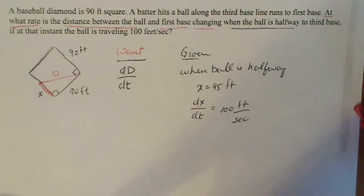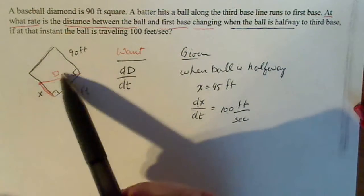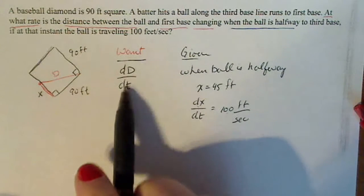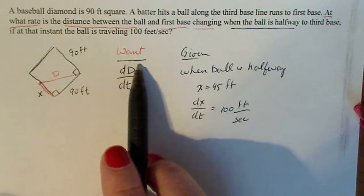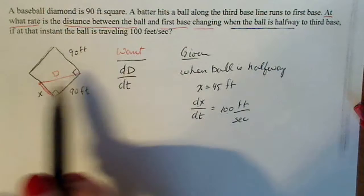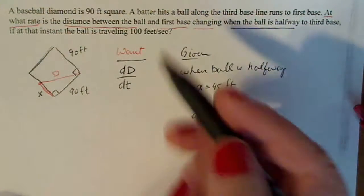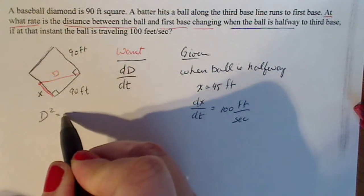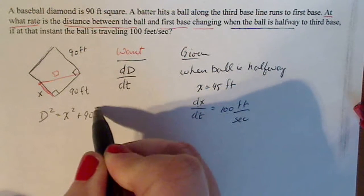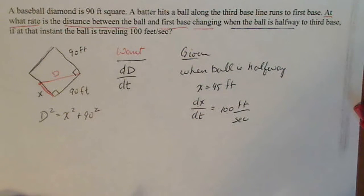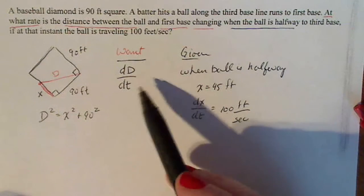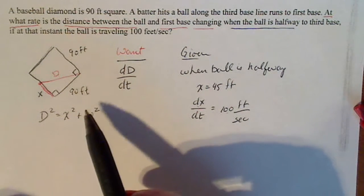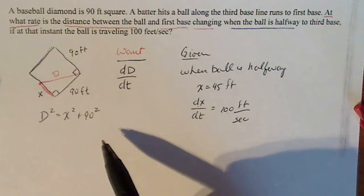In the next step, I have to relate those two things together because that's all the information I have. I have dX/dt, which is given, and dD/dt, which is what I want. When I look at the picture, I see they're arranged in a right triangle, so I can say D² = X² + 90². From here I should be able to work through the problem.